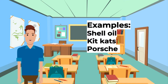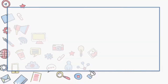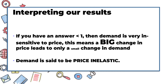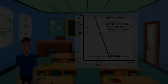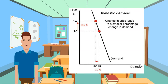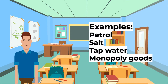When demand is price inelastic, a big change in price leads to only a small change in demand. In this example of inelastic demand, a 40% increase in price has led to only a 10% decrease in quantity. The PED in this case is 0.25. Examples of these types of goods are petrol, salt, tap water, and generally goods that are produced by a monopoly.